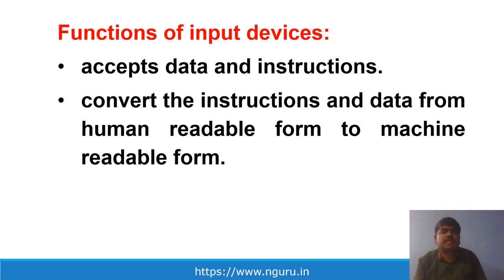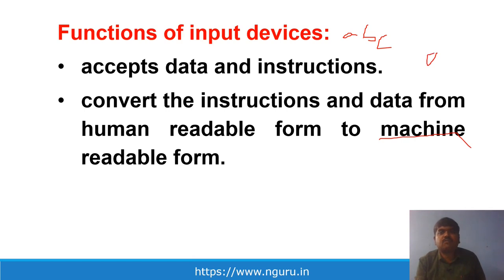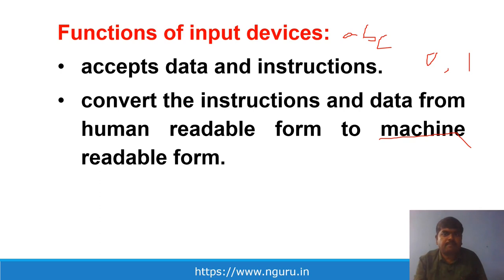Input devices convert instructions and data from human-readable form to machine-readable form. When you type A, B, C, that is human-readable form — only humans can understand it. But the machine only understands zeros and ones, so the input devices accept what you type, like 'RAJ' or '10 plus 20', and convert it from human-readable form to machine-readable form — zeros and ones.